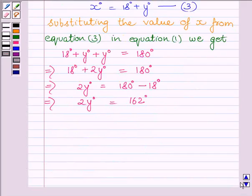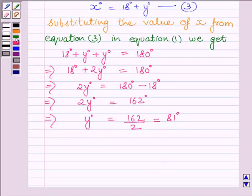This further implies y is equal to 162 upon 2 equal to 81 degrees. Therefore, y is equal to 81 degrees.